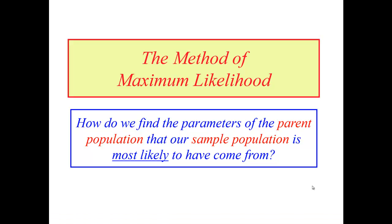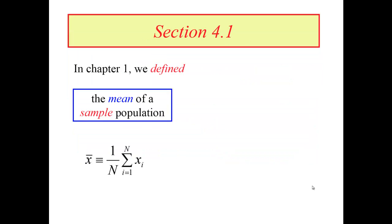Welcome back to Physics 246 Online. Today we're going to move into Chapter 4 in Bevington's book and introduce formally the method of maximum likelihood. The goal of this method is to find the parameters of the parent population of a set of data that our sample population is most likely to have come from. The parent population is this hypothetical infinite set of measurements; our sample population is simply a finite set of those data.